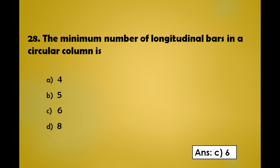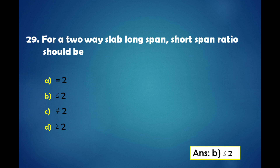The minimum number of longitudinal bars in a circular column is: A) 4, B) 5, C) 6, D) 8. The answer is: the minimum number of longitudinal bars in a circular column is 6. For a two-way slab, long-span to short-span ratio should be: A) equal to 2, B) less than or equal to 2, C) not equal to 2, D) greater than or equal to 2. The answer is: for a two-way slab, long-span to short-span ratio should be less than or equal to 2.